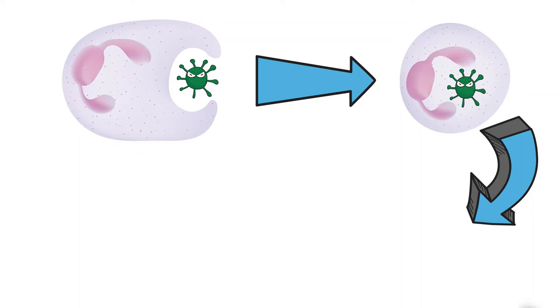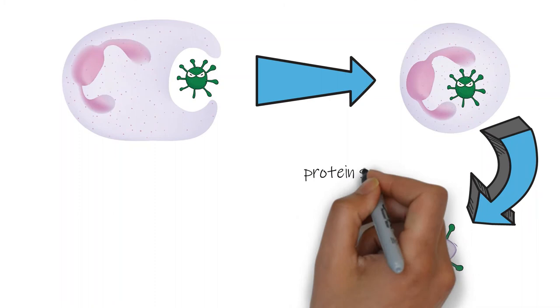But the phagocyte doesn't throw away all the bits of the virus straight away. It keeps the viral protein spikes, the thing the virus uses to attach to your cells, and it shows them to the B cells.